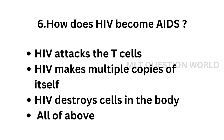Question number 6: How does HIV become AIDS? Option A, HIV attacks the T cells; option B, HIV makes multiple copies of itself; option C, HIV destroys cells in the body; option D, all of the above.